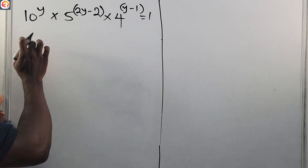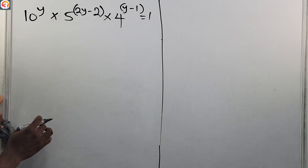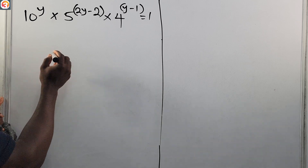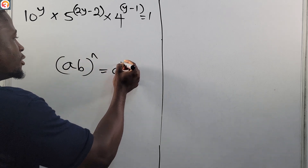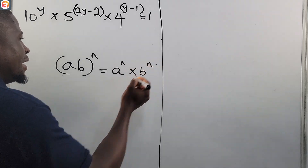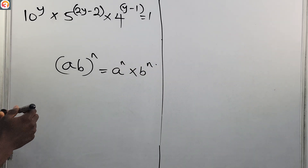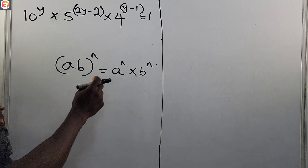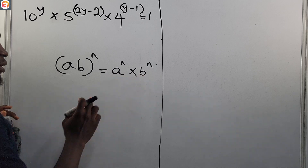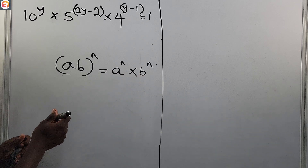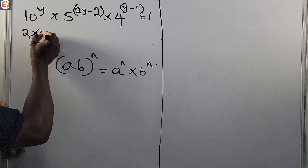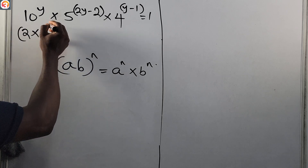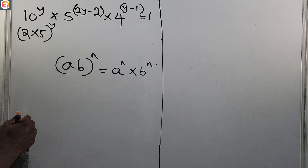From this 10 to the power y, let's begin here. We know from the law of indices that (ab) raised to power n is the same as a raised to power n times b raised to power n, with the condition that they are different. So that means we can also split 10 as 2 times 5, all raised to power y.